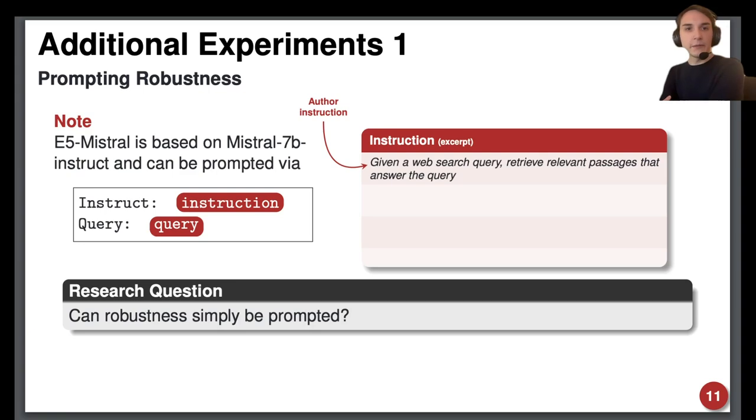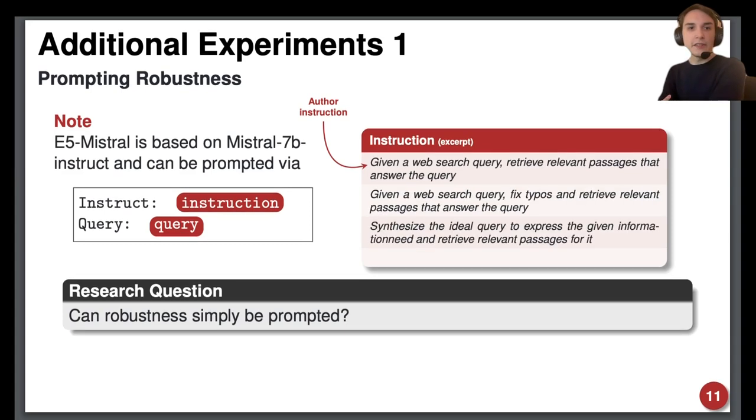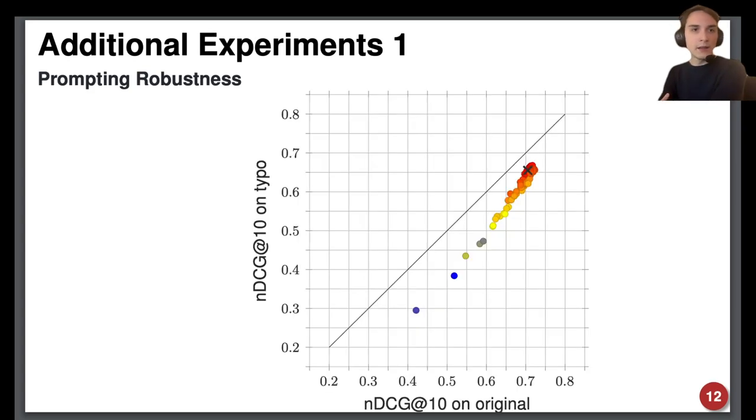E5-Mistral's authors instructed Mistral to, given a web search query, retrieve relevant passages that answer the query. We tried variations of this instruction in completely different instructions and plotted them. Here, the X marks the author's instruction and the points mark the effectiveness of our instructions on the original query and misspelled variants. The black line marks ideal robustness since it denotes the exact same effectiveness on the original query and typo-induced variants.